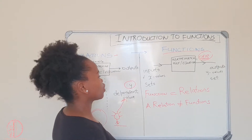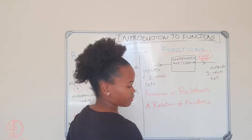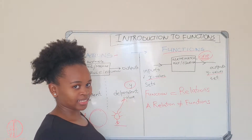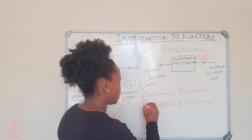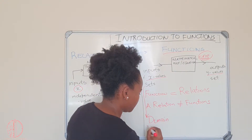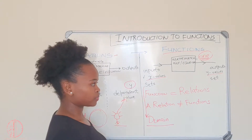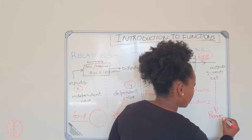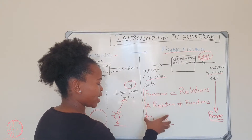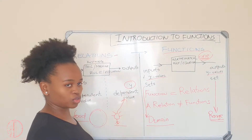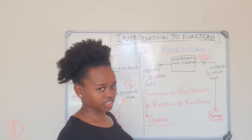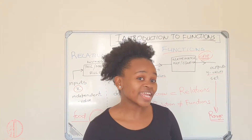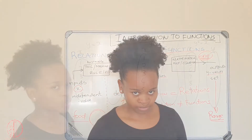We still use the same terms: x values and y values. The set of x values we put into a function is called the domain. The y output set is known as the range. Do not forget these terms — domain and range — we're going to use them throughout. A function takes x values and produces exactly one output for each and every x value.